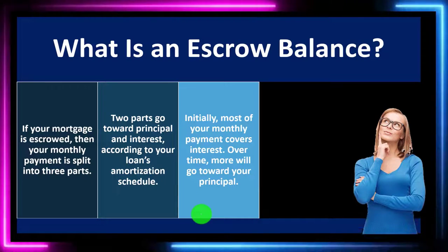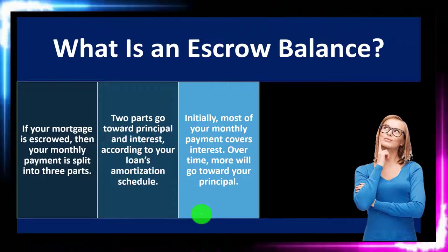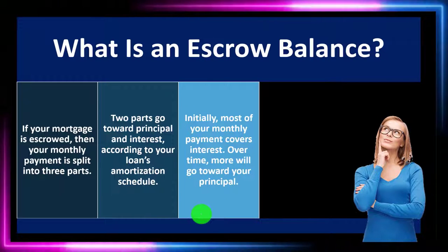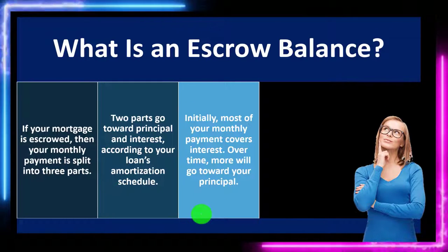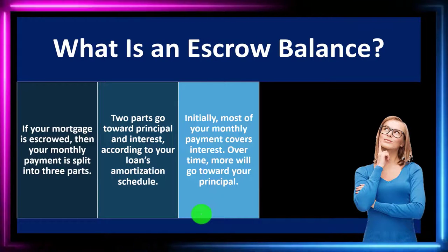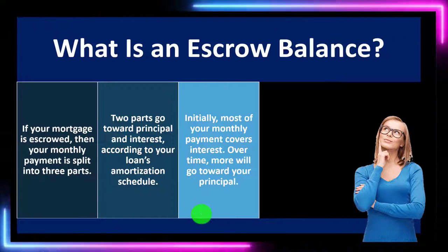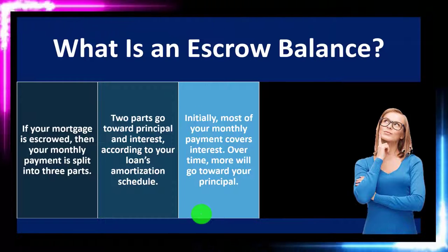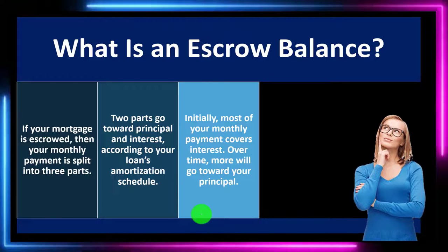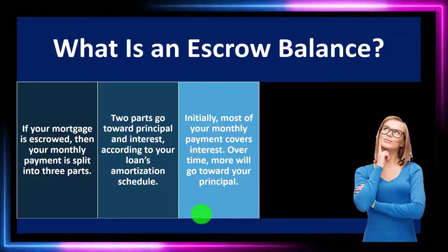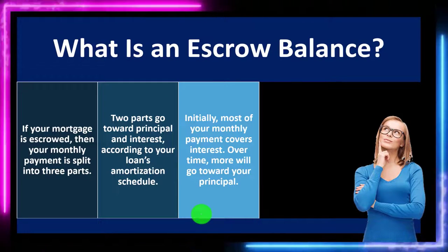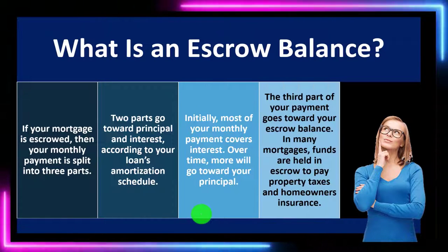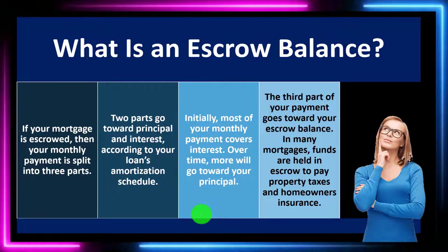Initially, most of your monthly payment covers interest, because your loan balance is higher so the rent on the loan is higher. Over time, more goes towards principal. Towards the end of a 30-year loan, most of what you're paying is going towards principal — paying down the loan balance — as opposed to interest, because interest is essentially renting the purchasing power of the principal that's still left. This has a significant impact on taxes if interest is deductible.